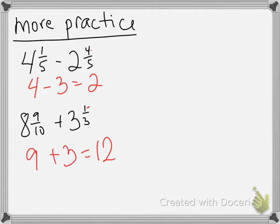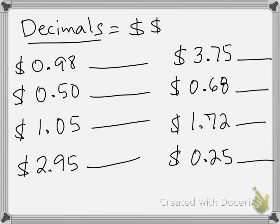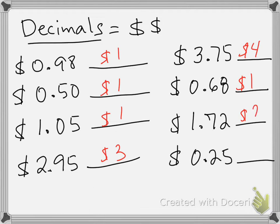Now we have decimals — this should be fairly easy. We're going to estimate to the closest dollar. So: 98 cents rounds to 1 dollar; 50 cents rounds to 1 dollar; 1 dollar and 5 cents rounds to 1 dollar; $2.95 rounds to 3 dollars; $3.75 rounds to 4 dollars; 68 cents rounds to 1 dollar; $1.72 rounds to 2 dollars; and 25 cents rounds to 0 dollars.